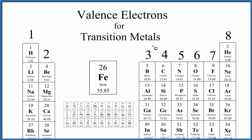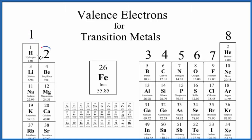So when we look at the periodic table, the main group elements, it's pretty easy to figure out the valence electrons. Group one here — all of these have one valence electron. Group two — they all have two valence electrons. We skip the transition metals. They're a little more complicated.